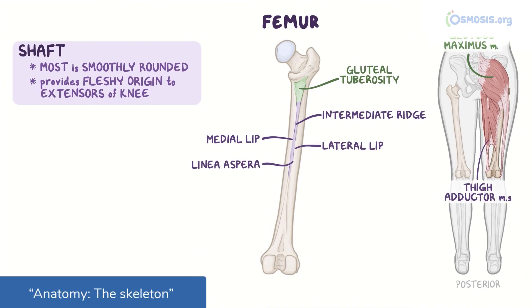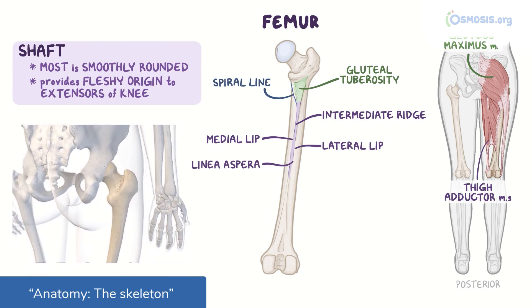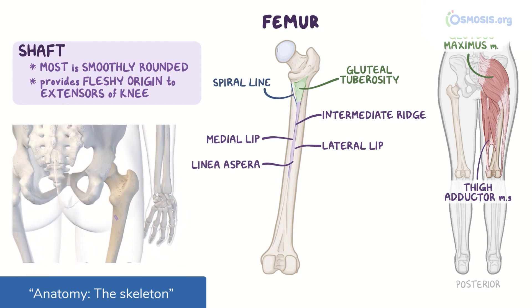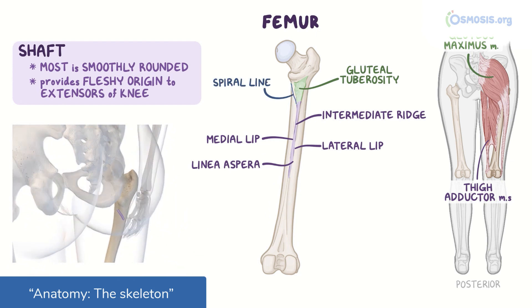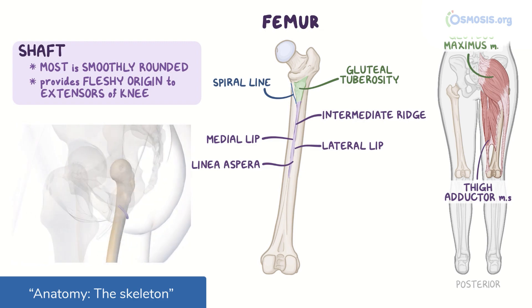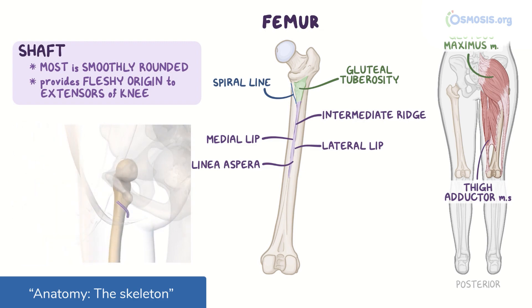The medial lip, on the other hand, continues superiorly as a spiral line, which extends towards the lesser trochanter, and then passes to the anterior surface of the femur.